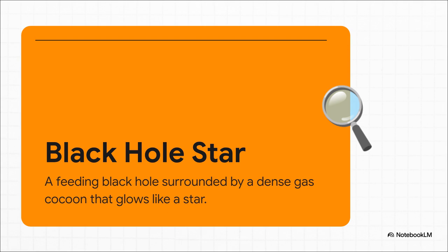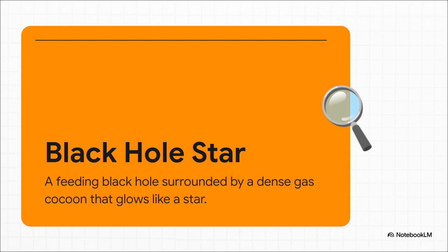What in the world is a black hole star? The idea is this: you have a massive black hole feeding on gas so fast that it releases a tremendous amount of energy. All that energy heats up a super-dense cocoon of gas surrounding the black hole, and this gas cocoon gets so hot that it starts to glow, just like a star. But here's the crucial part - it's not powered like a normal star. Our sun gets its energy from nuclear fusion happening in its core. A black hole star is powered by accretion - the raw, powerful energy released by all that gas and dust falling into the black hole.